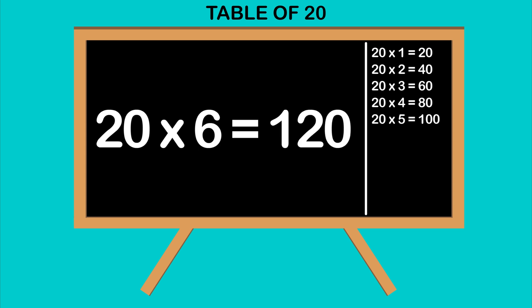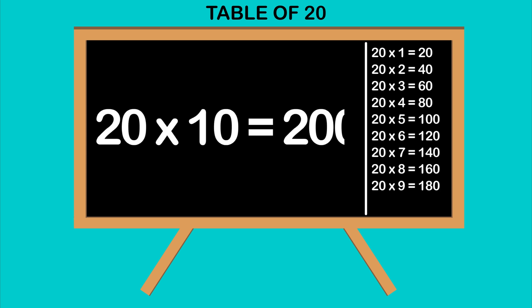20 sixes are 120, 20 sevens are 140, 20 eights are 160, 20 nines are 180, 20 tens are 200.